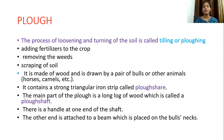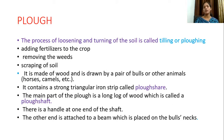Traditionally we are using the plow made up of wood, drawn by a pair of bulls or other animals like horses or camels. It contains a strong triangular iron strip which is called the plow share. The main part of the plow is a long piece of wood which is called the plow shaft. There is a handle at one end of the shaft, and the other end is attached to a beam which is placed on the bull's neck.